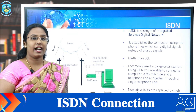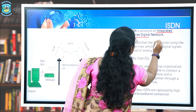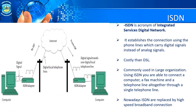The next type of internet connection is ISDN, which stands for Integrated Service Digital Network. It establishes the connection using phone lines which carry digital signals instead of analog signals. It is costly as compared to DSL. It is commonly used by large organizations, and with the help of ISDN we can connect a computer, a fax machine, and a telephone all together through a single telephone line. Nowadays, ISDN is being replaced by high-speed broadband connections.